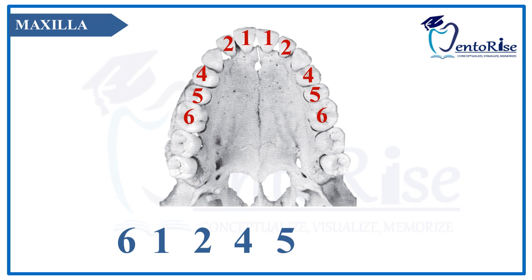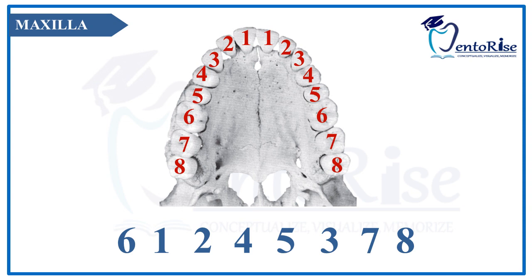After the premolars, the canine will take its position, represented by tooth number 3. After the canine, the second molar represented by tooth number 7 and the third molar represented by tooth number 8 will erupt into the oral cavity. Therefore, the maxillary eruption sequence will go like 6, 1, 2, 4, 5, 3, 7, 8. This is different in the maxilla.